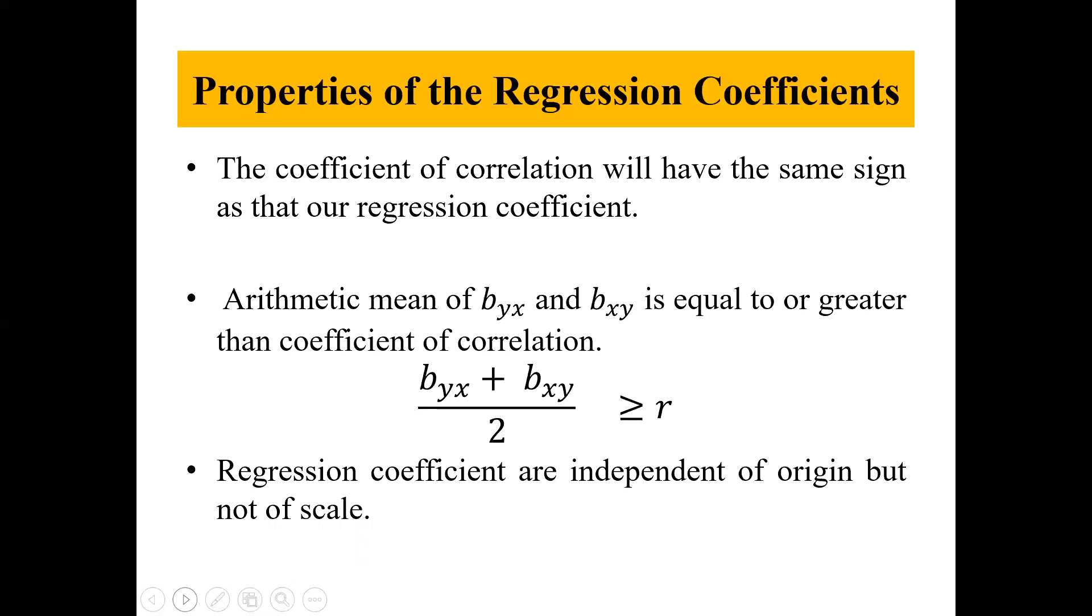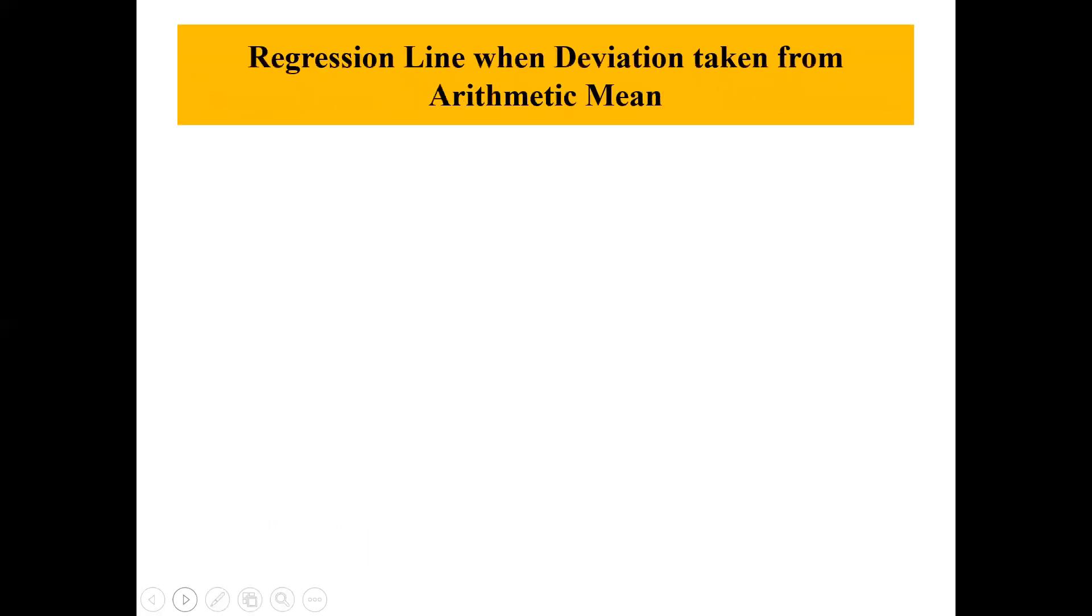These are the important properties of regression coefficients. For regression line when deviation taken from arithmetic mean, the regression coefficient of y on x can be written as: y minus y bar equals b y x times x minus x bar.